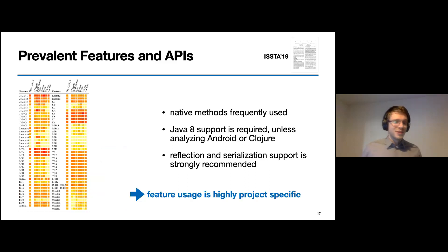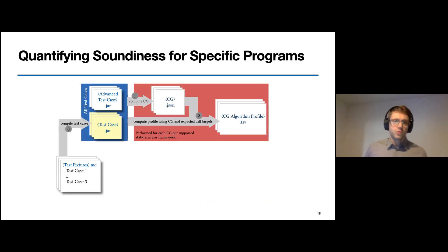Whatsoever, we definitely learned that we identified relevant language features and that they are used throughout many different programs. But we also see that a program's feature usage is highly specific. When we want to quantify a call graph's soundness, we must consider the program that we want to construct a call graph for. So we kind of need to do it in a project-specific way.